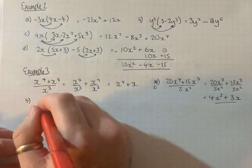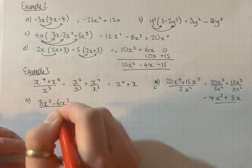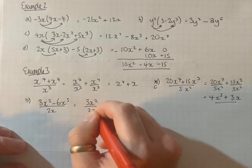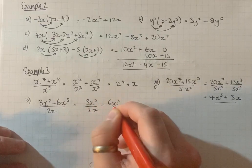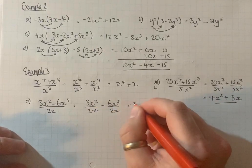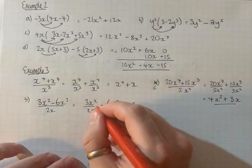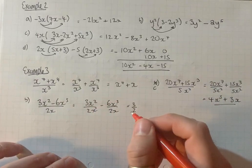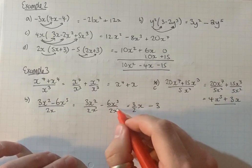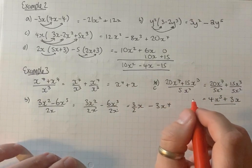So coming back to do B. 3x squared take away 6x to the 5 divided by 2x. Just split that up. 3 over 2, we would leave as 3 over 2. You could put 1.5 if you wanted to. 2 take 1, x squared divided x is just x. 6 over 2 is 3. And then 5 take away 1 is 4.